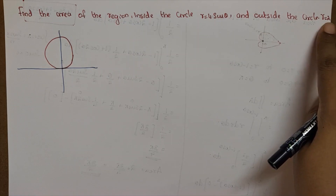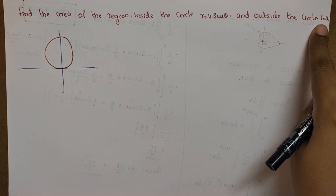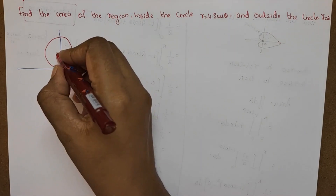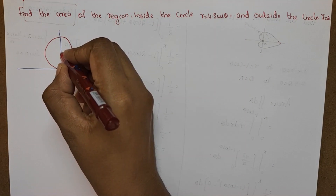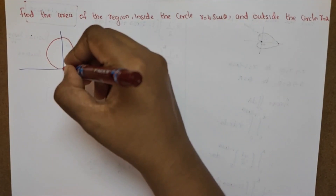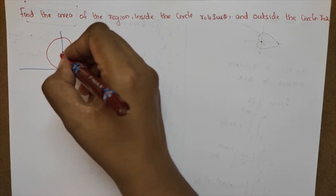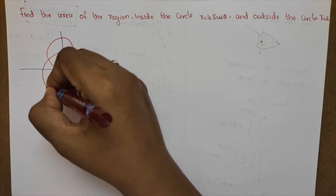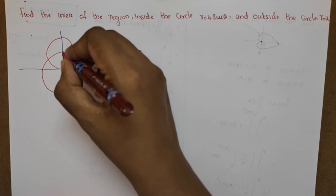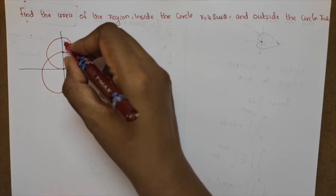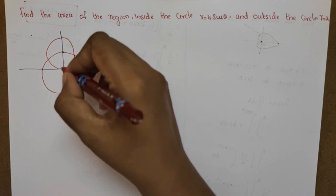If r equal to 2, you know R is the radius. If the radius is 2, it's a circle with center (0, 0) and radius 2. If r equal to 4, then it will be a circle with a different center and radius. It is not just a simple circle.